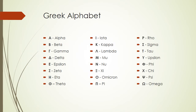Looking at the Greek alphabet, we can see how someone learning to read Greek would learn: alpha, beta, gamma, delta, epsilon, zeta, eta, theta, iota, and so on. The sound represented by the symbol was actually included in the name of the letter — like alpha and beta. That gave the final name to the alphabet, which comes from alpha and beta.